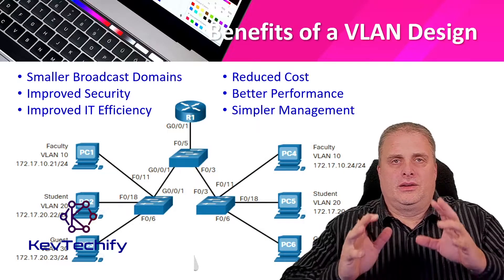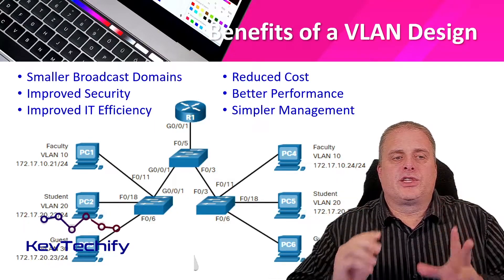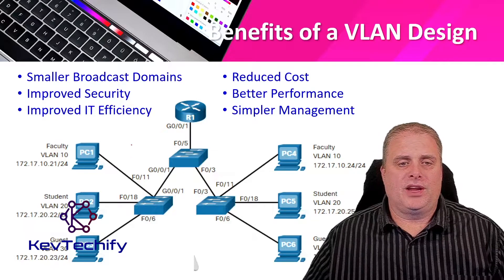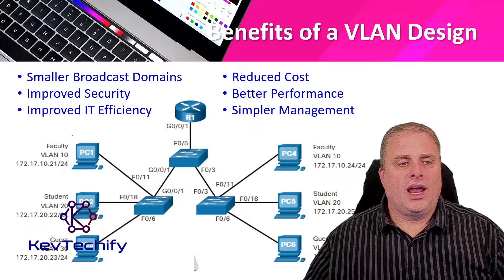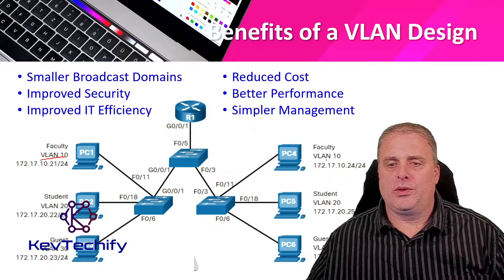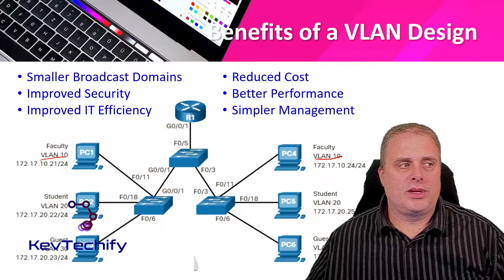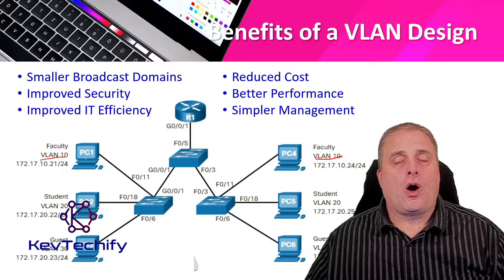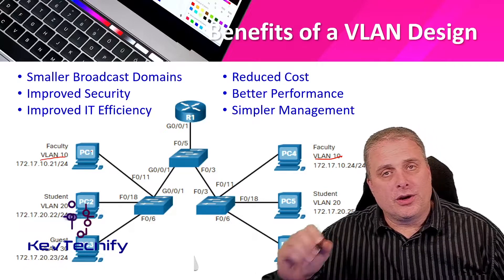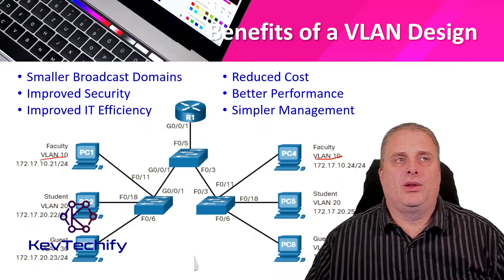As we look at designing VLANs on your network, there are some key benefits. First, we get a smaller broadcast domain. In the graphic, we have six PCs spread across our network with three different VLANs. VLAN 10 is on PC1 and PC4. When we send out a broadcast from PC1, all other PCs in VLAN 10 hear it, but if you're in a different VLAN, you don't hear it. This means smaller broadcasts using less bandwidth.